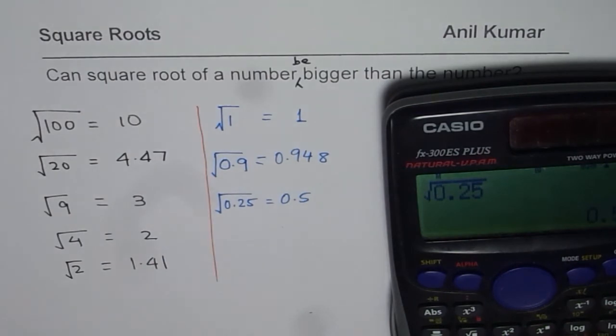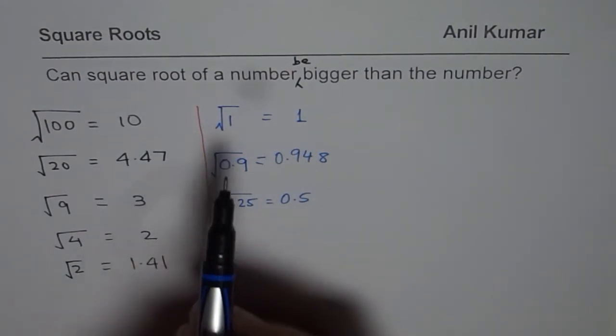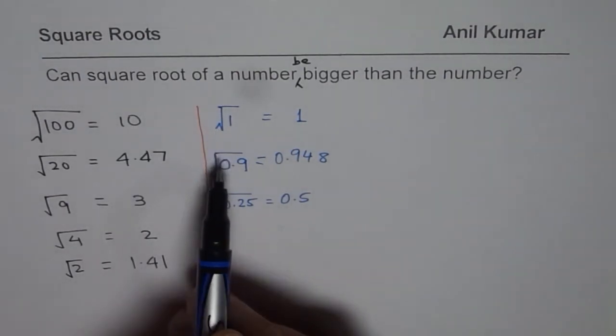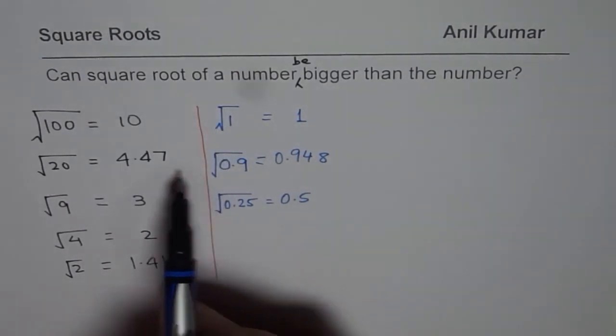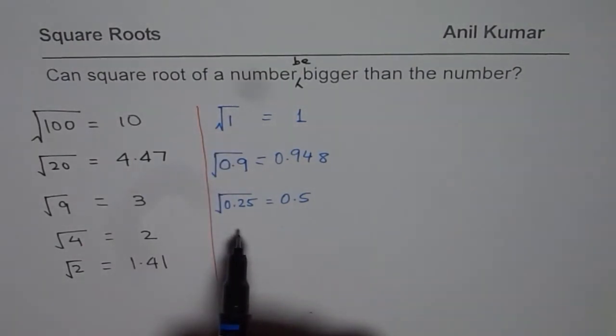So square root of a number can actually be bigger than the number itself, provided the number is less than 1, right? So if the number is less than 1 and greater than 0, of course, we are talking about positive, non-negative numbers. Only then you can find square root.